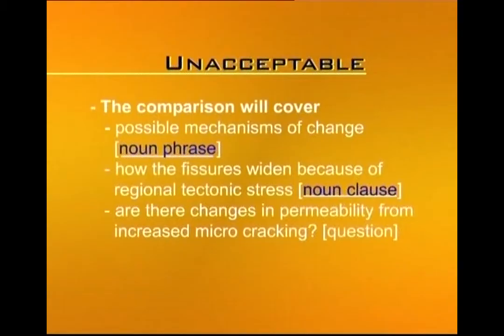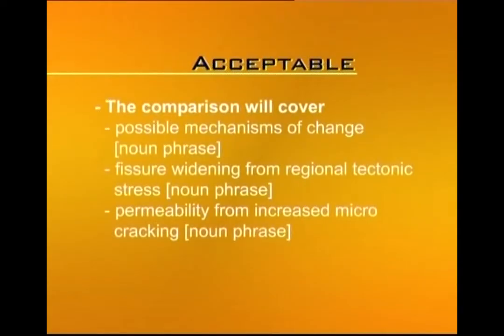Similarly, it would be unacceptable to say: 'The comparison will cover possible mechanisms of change' — a noun phrase — 'How the fissures widen because of regional tectonic stress?' — a noun clause — and 'Are there changes in permeability from increased micro cracking?' — a question. When you are listing three different things, all three elements must be parallel in structure. The improved version would be: 'The comparison will cover possible mechanisms of change, fissure widening from regional tectonic stress, and permeability from increased micro cracking' — all noun phrases.